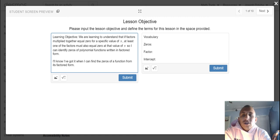In today's lesson, we're going to be learning to understand that if factors multiplied together equals zero at a specific value of x, at least one of the factors must also equal zero at that value of x, so that I can identify zeros of polynomial functions written in factored form.